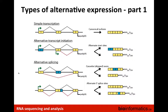Alternative transcript initiation occurs when there are two choices for the first exon. The transcriptional machinery might initiate at one location and use that exon, which then gets spliced onto exons two and three, or it could initiate at the second exon, skipping the first entirely. This gives you two isoforms — one with three exons and one with two — called alternate transcript initiation or alternate TSS usage.